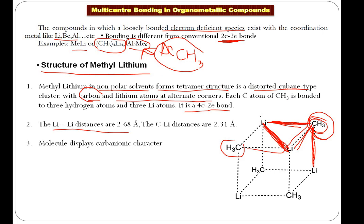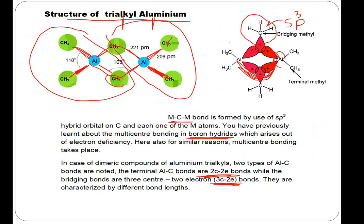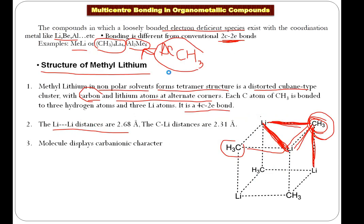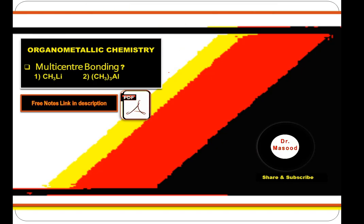So these are the two interesting cases of multi-center bonding in organometallic compounds. To summarize: for methyl lithium — it is a tetramer in non-polar solvents, has a cubane-like structure, methyl and lithium atoms are alternately arranged, and the bonding is a four-center two-electron bond. For trialkyl aluminum — it is a dimer with two bond types: two-center two-electron terminal bonds and three-center two-electron bridging bonds, similar to boron hydride. You can download the notes for exam use.